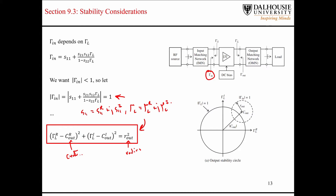Those equations are in the book and they're also in the equation sheet provided. Basically what I want to do is show you how to use these circle equations. Over here on the right, we have the output stability circle. It's a little bit confusing — we're looking at the input side of the amplifier, but the input side is related to what's happening on the output, so they call this the output stability circle.